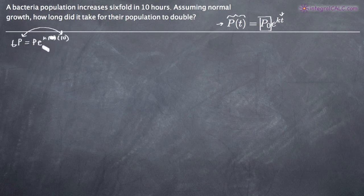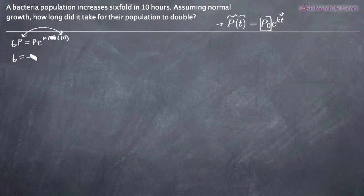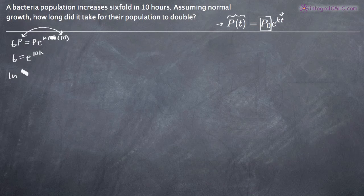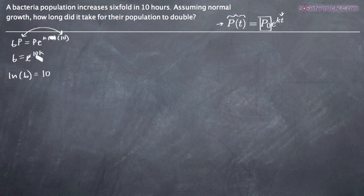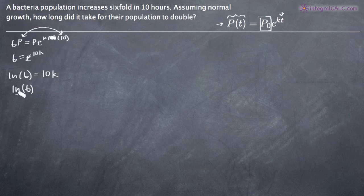We can now use this to solve for k, because k is the only remaining variable in this equation. To do that, we'll divide both sides by p, so the p's cancel and we're left with 6 equals e to the ten k. To solve for k, we'll take the natural log of both sides. The natural log of six equals ten k, since the natural log and e cancel, leaving just the exponent. So we divide both sides by ten and get k equals natural log of six divided by ten.